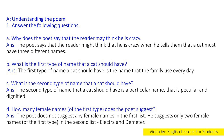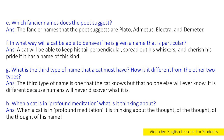D. How many female names of the first type does the poet suggest? Answer: The poet does not suggest any female names in the first list. He suggests only two female names in the second list — Electra and Demeter. E. Which fancier names does the poet suggest? Answer: The fancier names that the poet suggests are Plato, Admetus, Electra and Demeter.